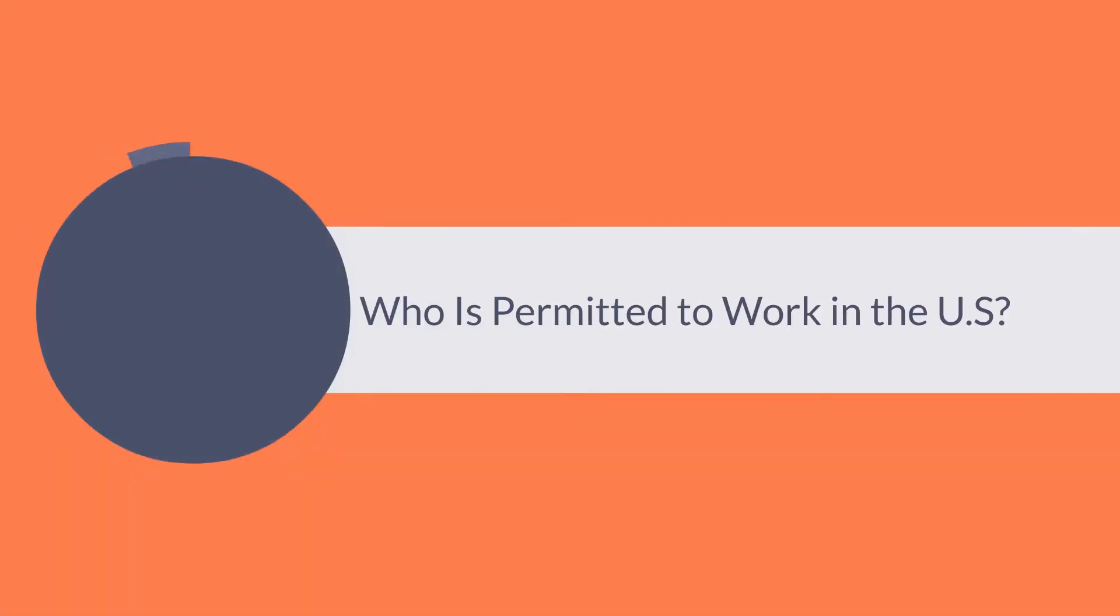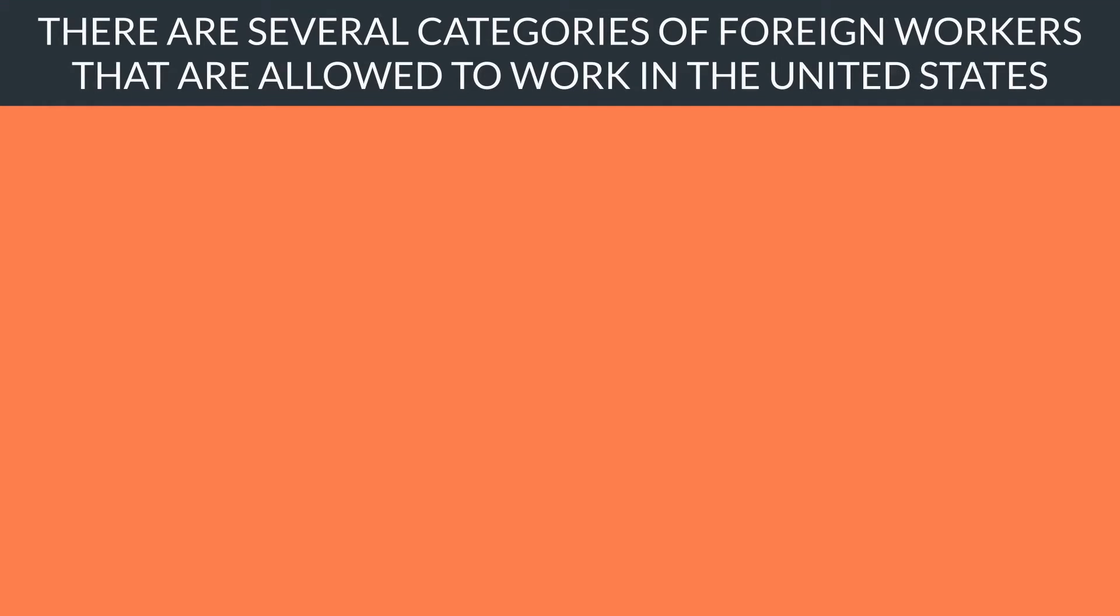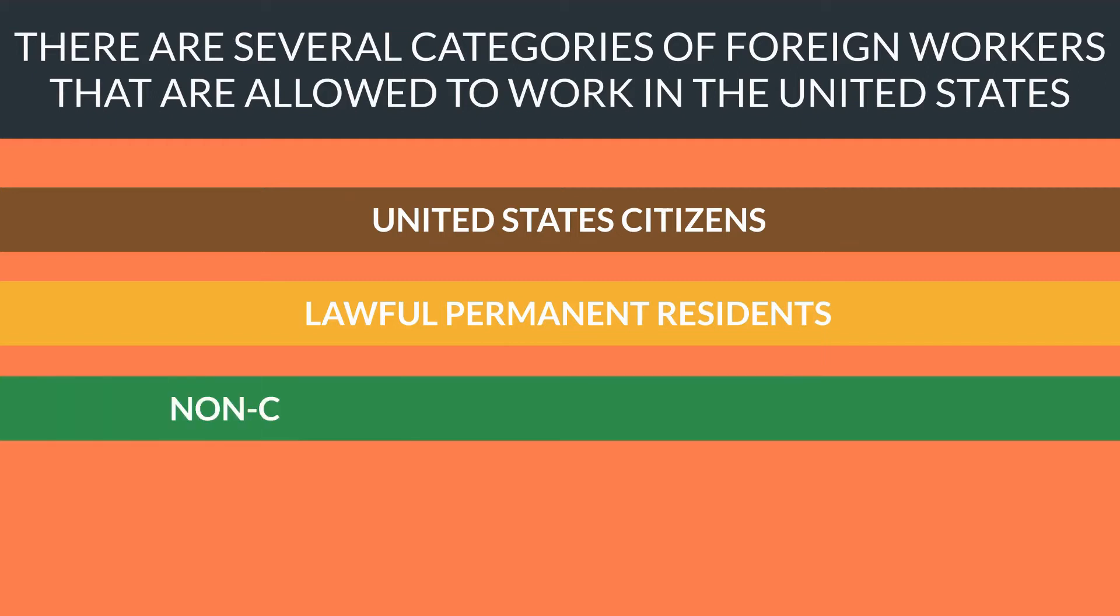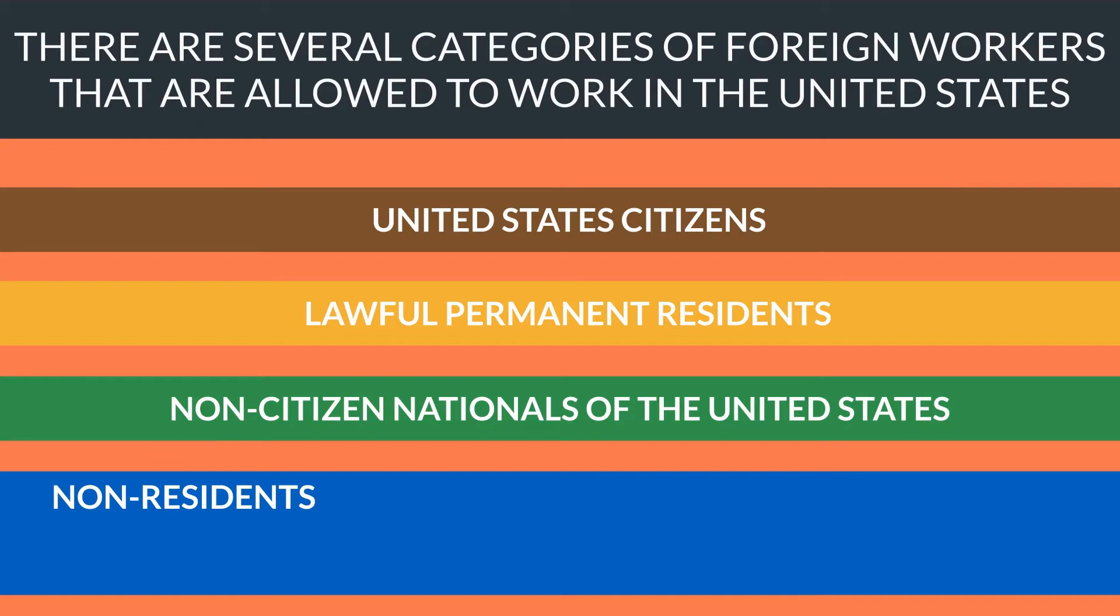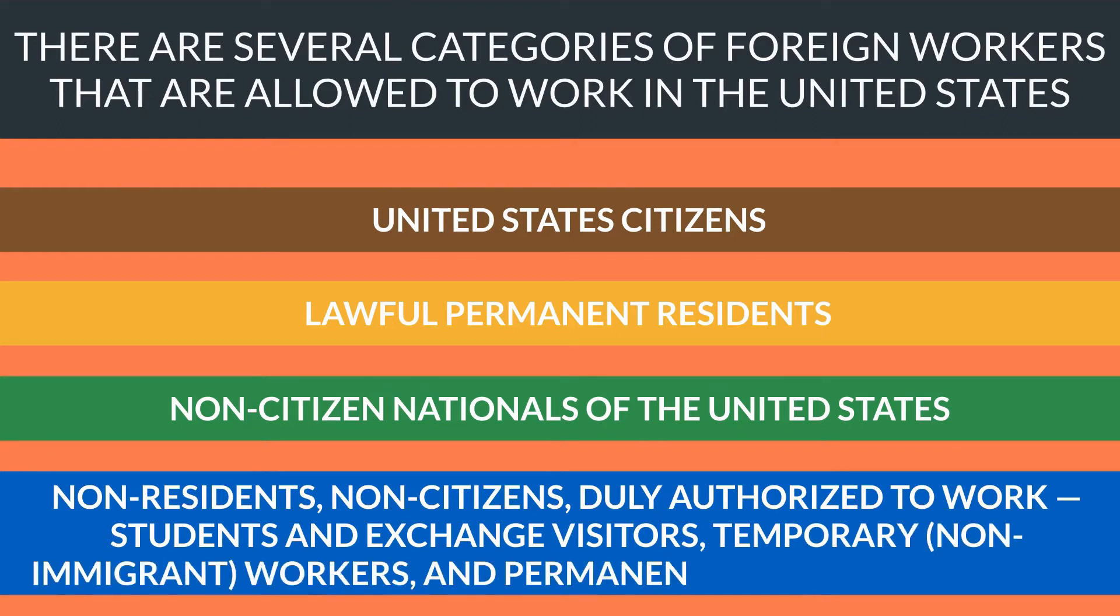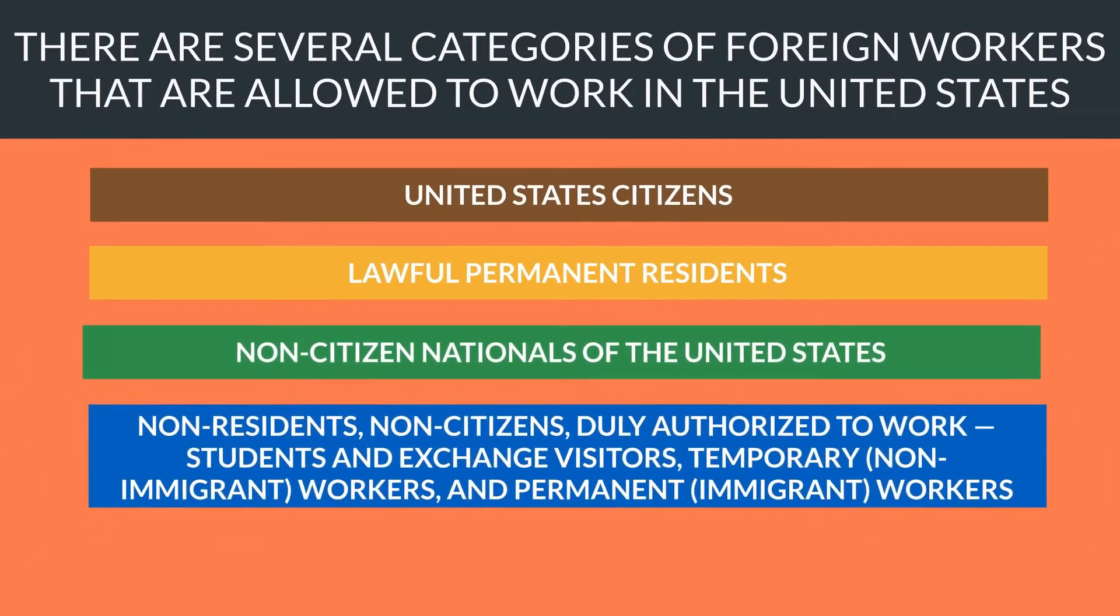There are several categories of foreign workers that are allowed to work in the United States. These include United States citizens, lawful permanent residents, non-citizen nationals of the United States, non-residents, non-citizens duly authorized to work, students and exchange visitors, temporary non-immigrant workers, and permanent immigrant workers. If you fall under any of these categories, you are authorized to work in the US.